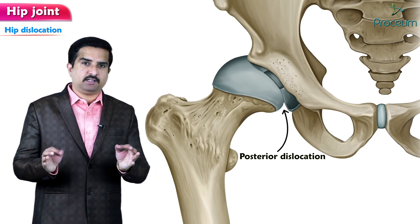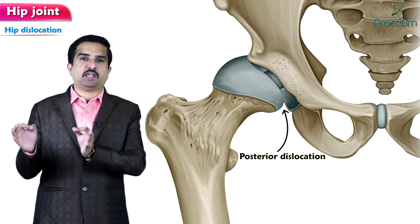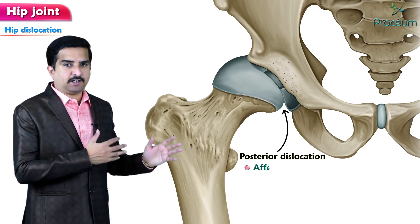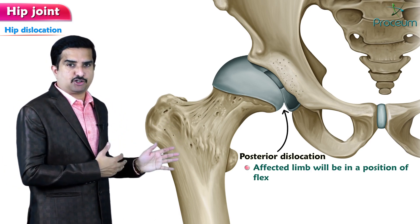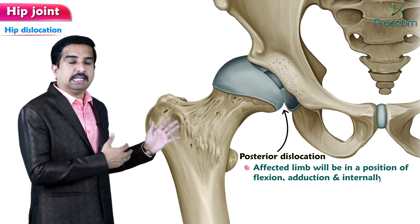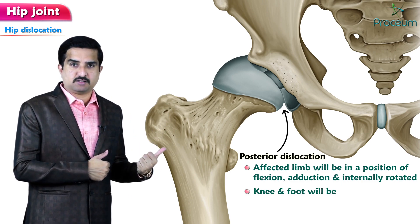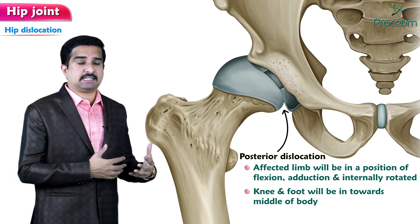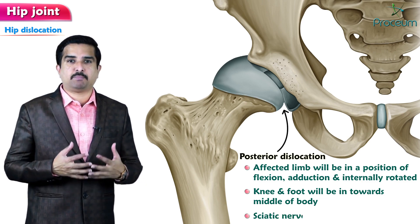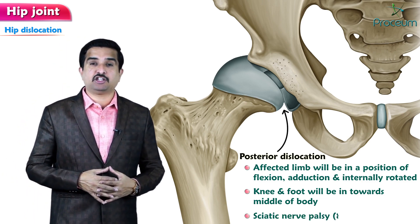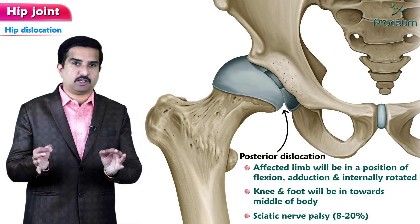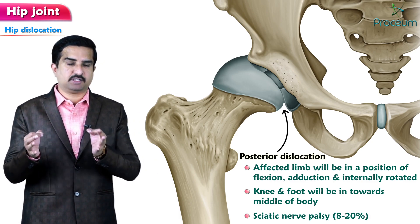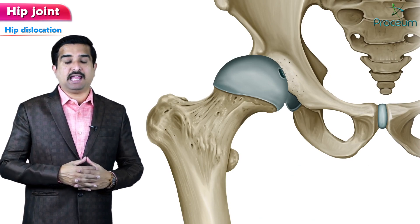9 out of 10 hip dislocations are posterior, making posterior dislocations very common. In posterior dislocation, the affected limb is in a position of flexion, adduction, and internal rotation, with the knee and foot directed toward the midline of the body. A sciatic nerve palsy is present in approximately 8 to 20 percent of such cases.